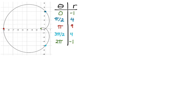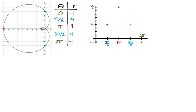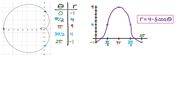Picking out those points is the weirdest part of this process. Once we do it, we set up the rectangular graph, plot our points, and sketch in a curve. From here we can write the equation: r equals — sinusoidal axis is four, it's a negative cosine so minus, I can go five in either direction from the sinusoidal axis so amplitude is five, and it's cosine. So: r = 4 - 5cos(θ). That's the polar equation — if you graph it on a calculator or GeoGebra, it's going to work.